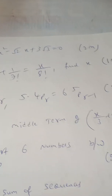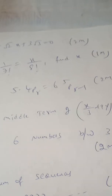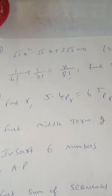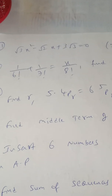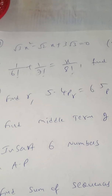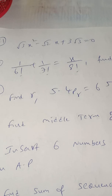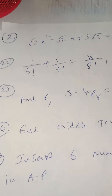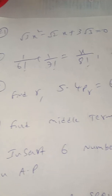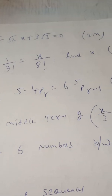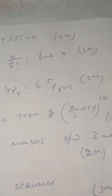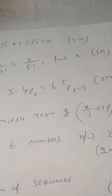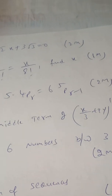You can write the answer directly — no need to hesitate, as they will give full marks whether you show steps or write directly. Another important question: find R if 5 × ⁴Pᵣ = 6 × ⁵Pᵣ₋₁. They may ask this permutation question for 2 marks.